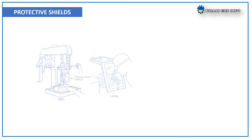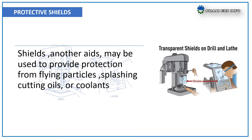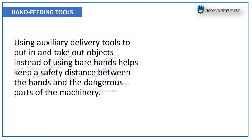Protective shields — shields and other aids may be used to provide protection from flying objects, splashing cutting oils, or coolants. Hand feeding tools — using auxiliary delivery tools to put in and take out objects instead of using bare hands helps maintain a safe distance between hands and the dangerous parts of the machinery. These are the engineering controls.